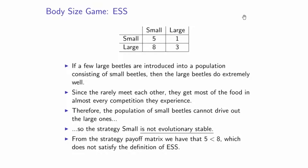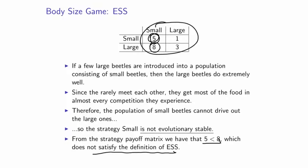From the strategy payoff matrix, the entry 5 is less than the corresponding entry — which violates the definition of evolutionary stable strategy. So this does not satisfy the ESS definition.